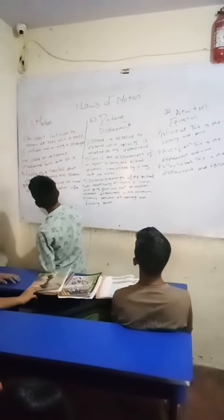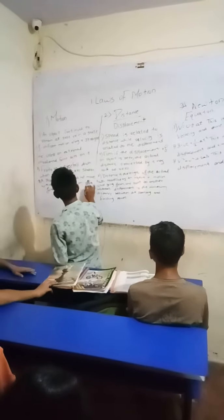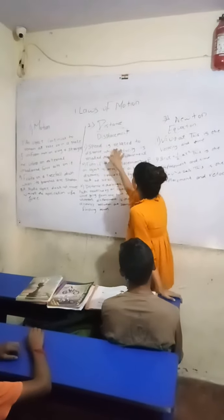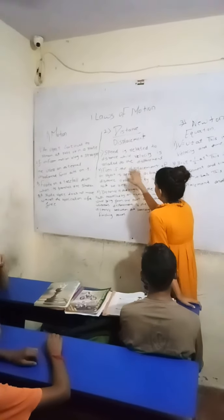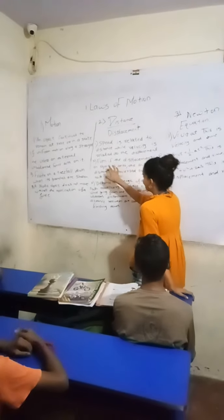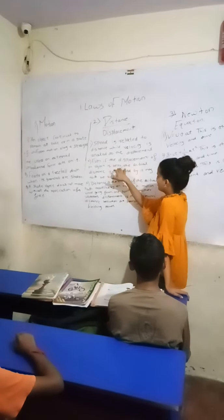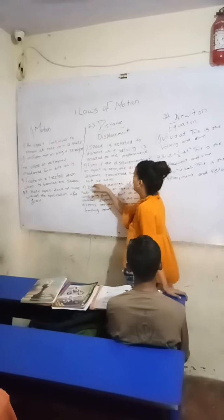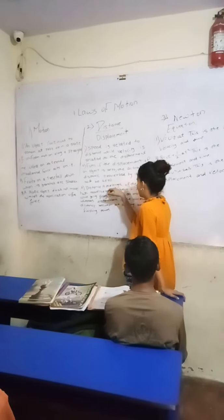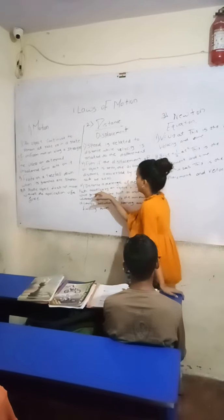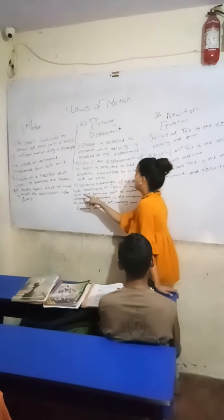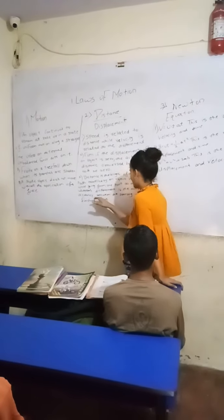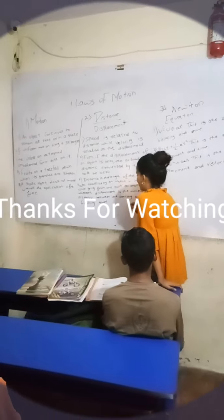Second point: a static object does not move without the application of a force. Displacement, first point: speed is related to distance while velocity is related to displacement. Second: even if the displacement of an object is zero, the actual distance traveled by it may not be zero. Third: distance is the length of the actual path traveled by an object in motion while going from one point to another, whereas displacement is the minimum distance between the starting and finishing point.